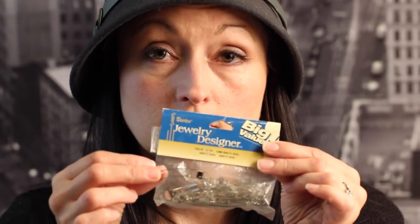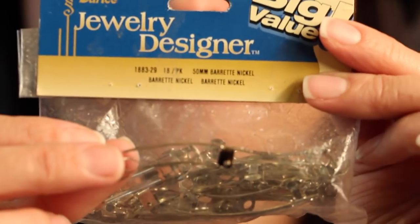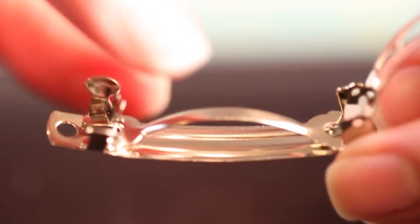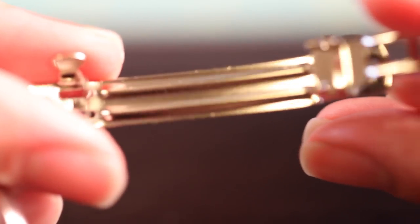First thing you'll need is some barrettes. These measure about an inch and three quarters and you can see there's a little spring inside that will actually remove when we're putting the wire and beads around the clip.